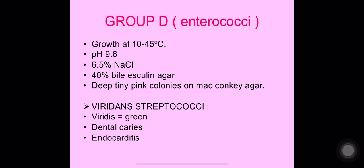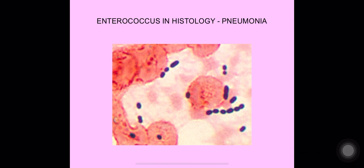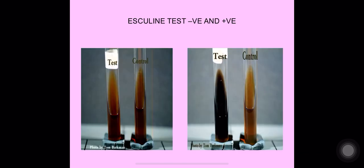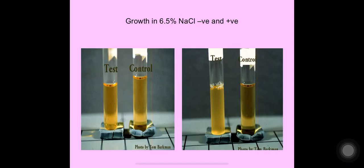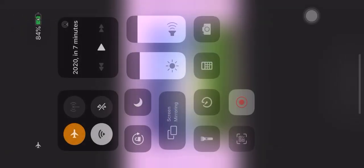Enterococci also give deep tiny pink colonies on MacConkey agar. Viridans streptococci — 'viridans' means green — are associated with dental caries and endocarditis. Enterococci in histology show gram-positive cocci in chains in cases of pneumonia. The esculin test (bile esculin test) and growth in 6.5% sodium chloride are positive in the case of enterococci.